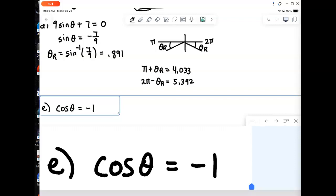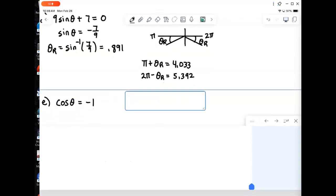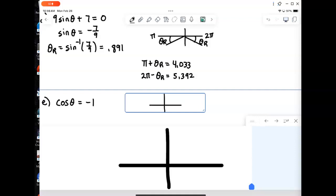The next step would usually be to find the reference angle. But here there is no reference angle because negative 1 is one of those quadrant values for us.